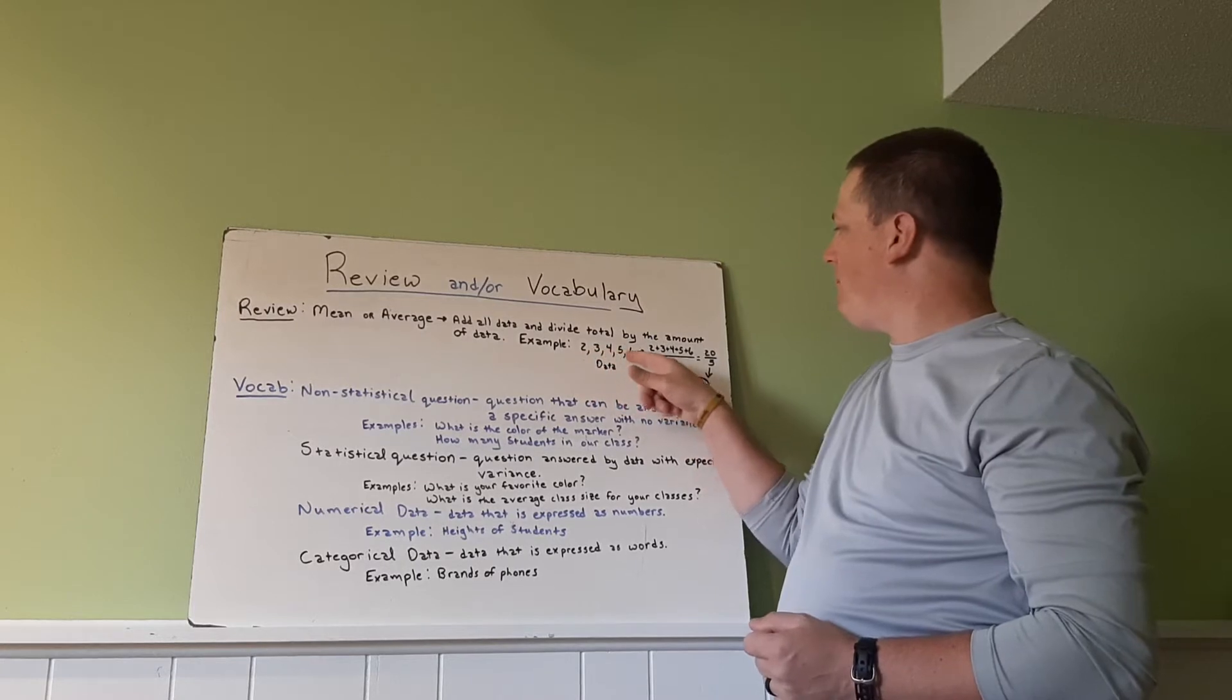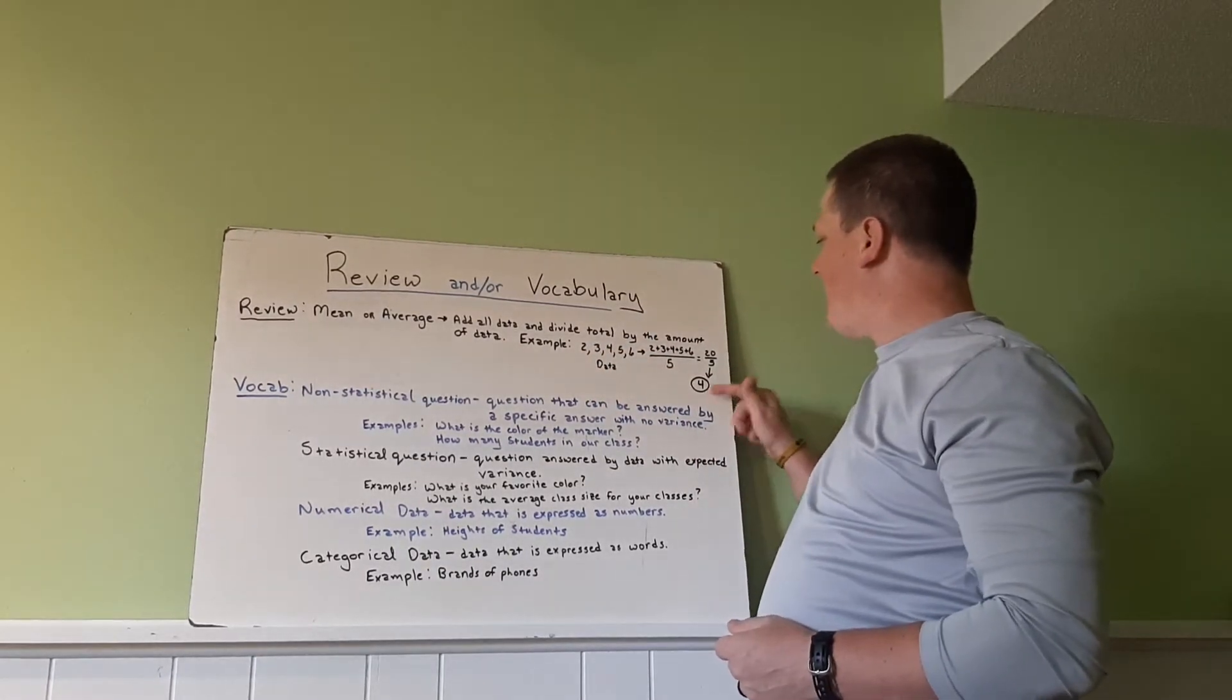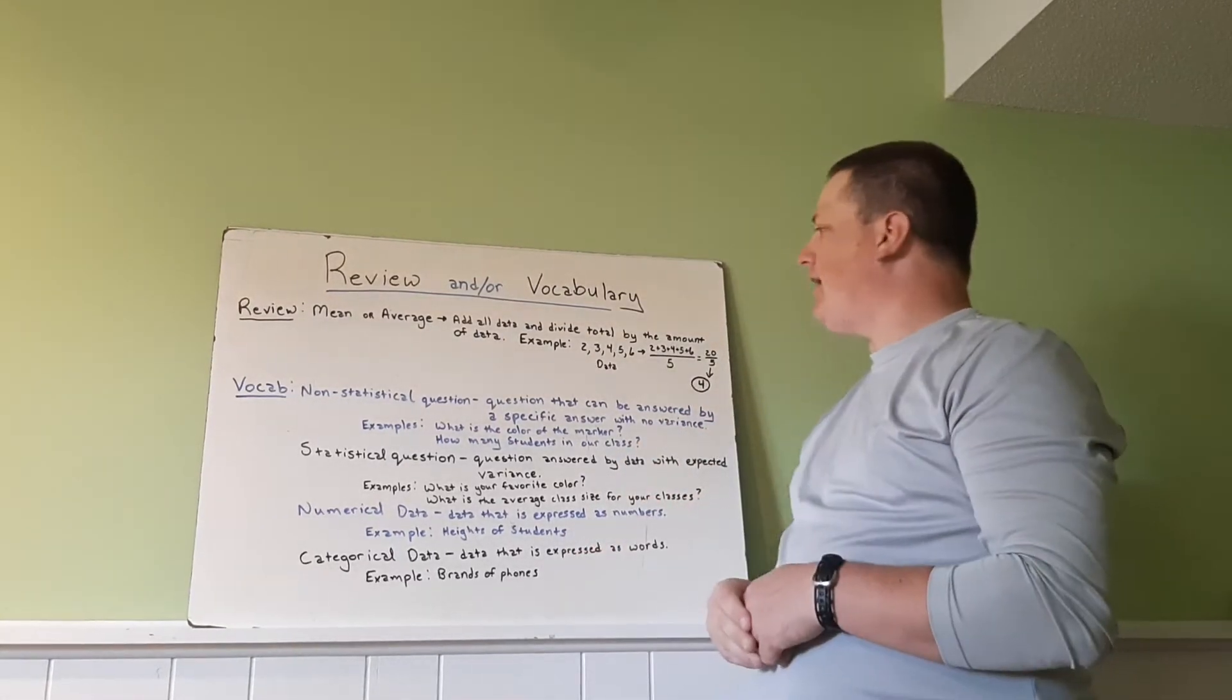There are 1, 2, 3, 4, 5 numbers. So we divide by 5. 20 divided by 5 means we have an average or a mean of 4.